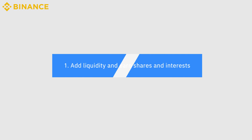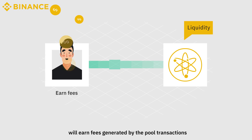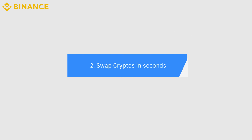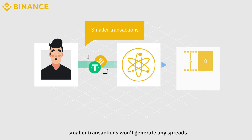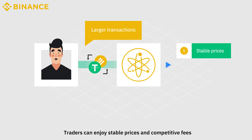1. Add liquidity and earn shares and interests — traders who add liquidity to the pool by adding funds will earn fees generated by the pool transactions and enjoy interests on cryptos. 2. Swap cryptos in seconds — smaller transactions won't generate any spreads, and larger transactions will significantly reduce slippage through the swap. Traders can enjoy stable prices and competitive fees.